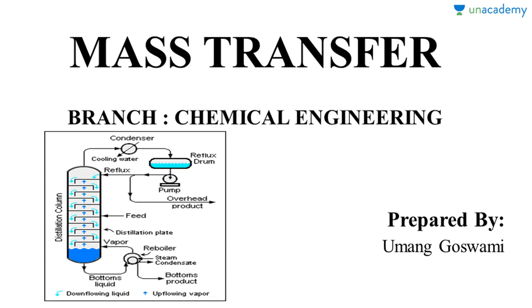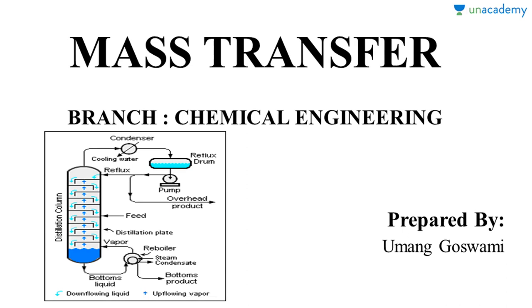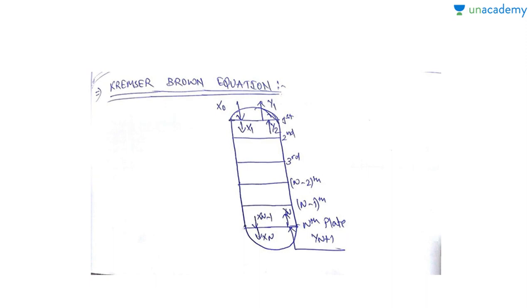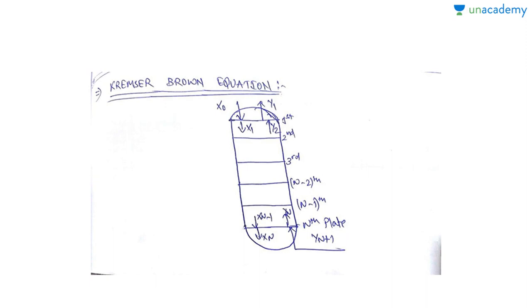Good morning everyone and welcome to lesson number 44 of mass transfer in the chemical engineering discipline on the topic of absorption. In the last lecture we discussed the co-current mode and counter-current mode for absorption and stripping, the concept of a stage, and the cascade — that is, a series of stages. Today we will be discussing another important topic known as the Kremser-Brown equation.